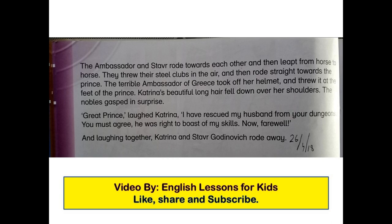The ambassador and Steve rode towards each other. They threw their steel clubs in the air and then rode straight towards each other. The terrible ambassador of Greece took off her helmet and threw it at the feet of the prince. Katrina's beautiful long hair fell down over her shoulders. The nobles gasped in surprise. 'Great prince!' laughed Katrina, 'I have rescued my husband from your dungeons. You must agree he was right to boast of my skills.' And laughing together, Katrina and Steve Gardevich rode away.